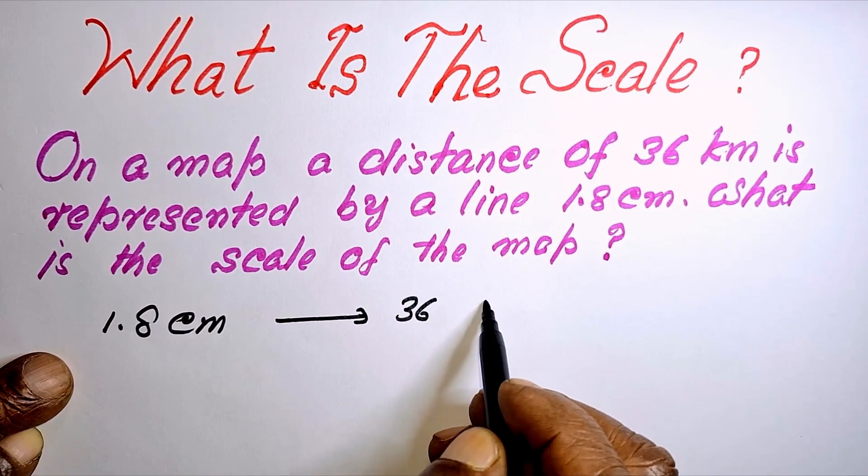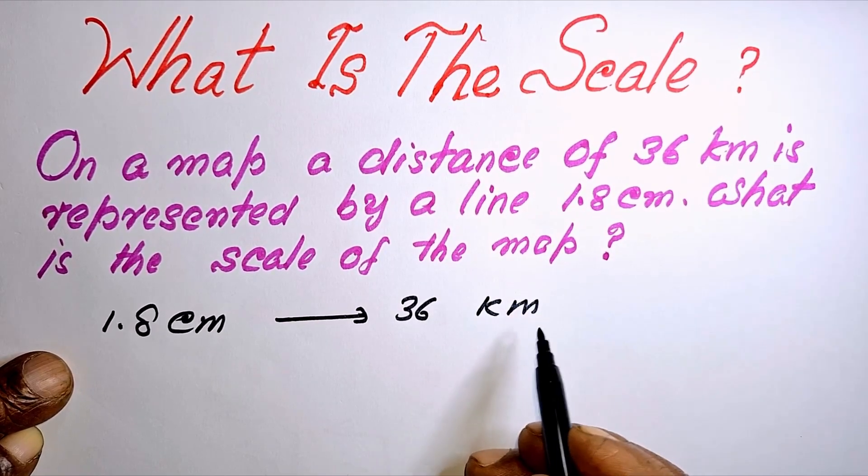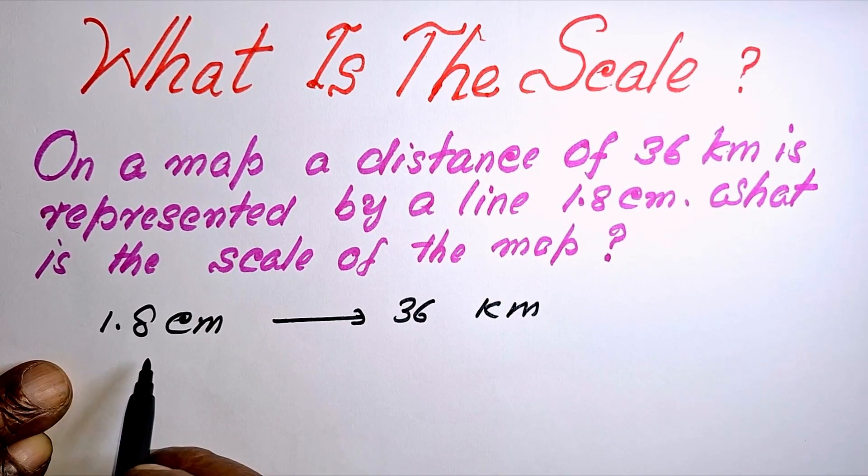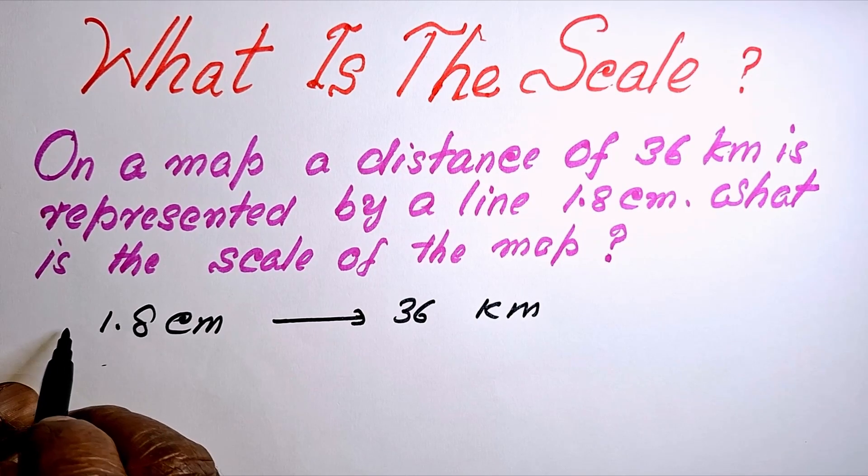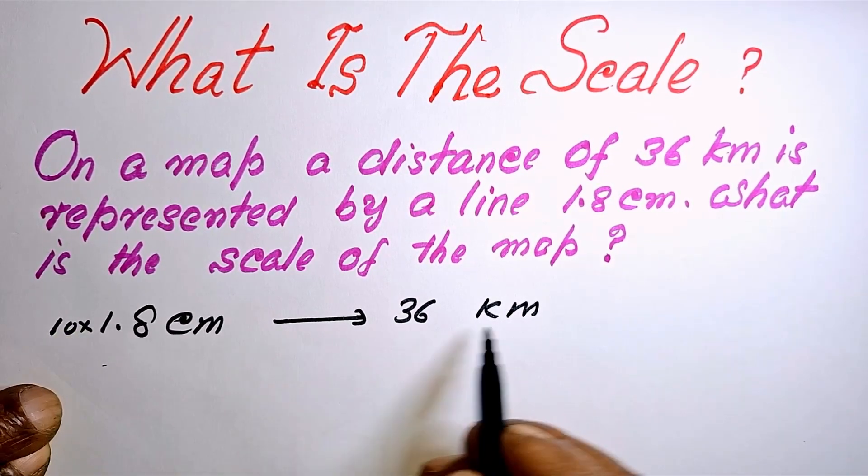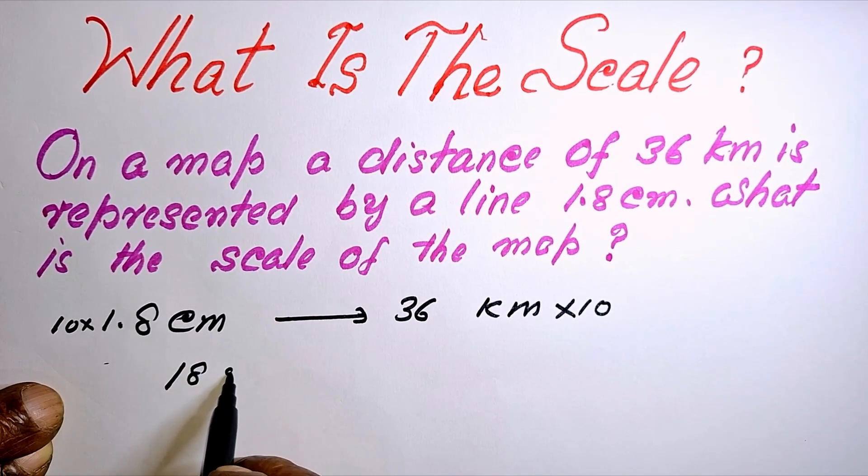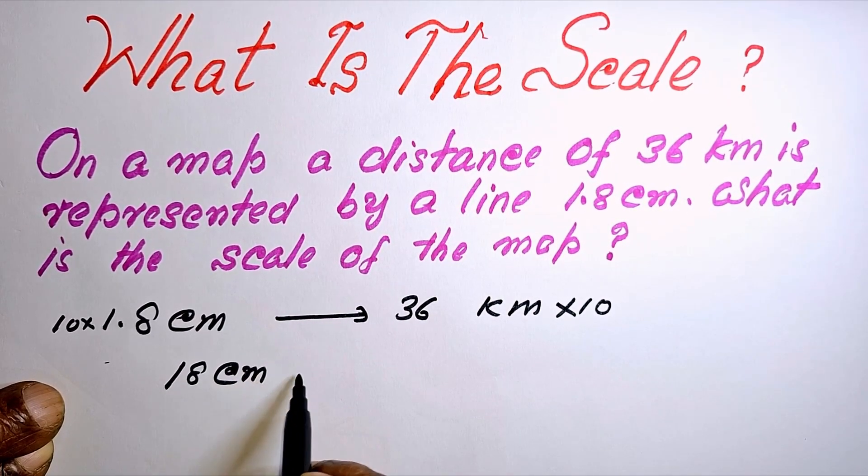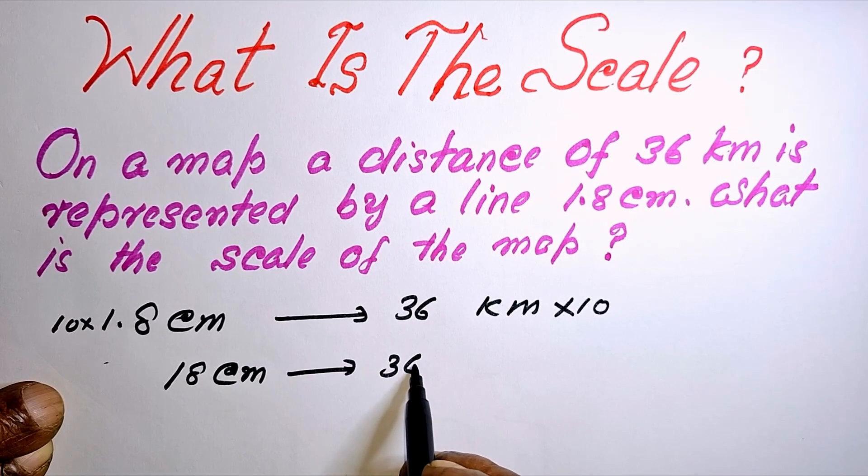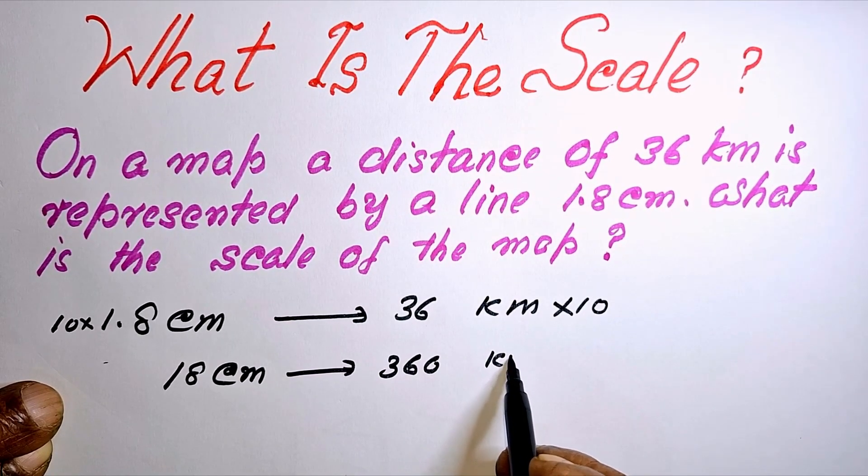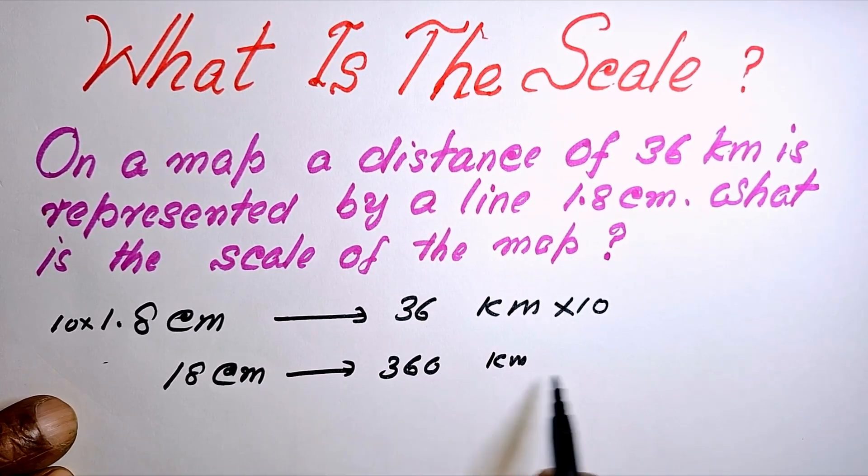represents 36 kilometers. So multiply both sides by 10. Then what will happen? 18 cm represents 360 kilometers. Now to get the scale, both